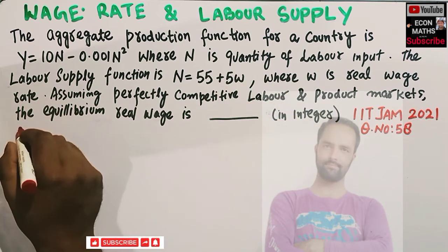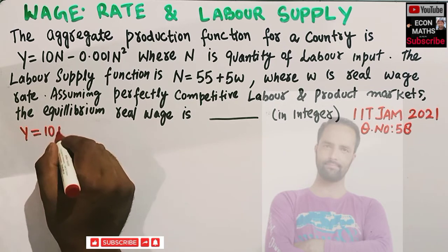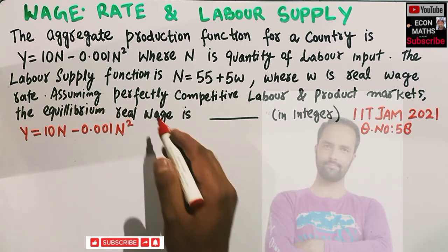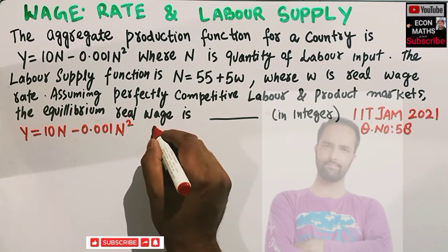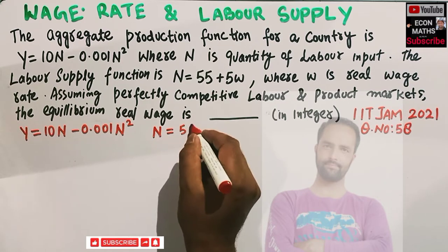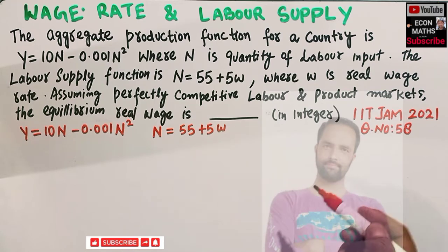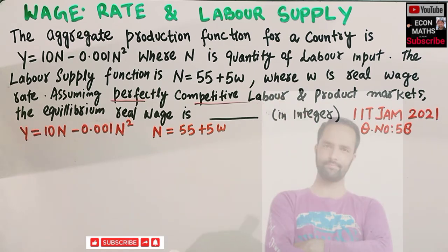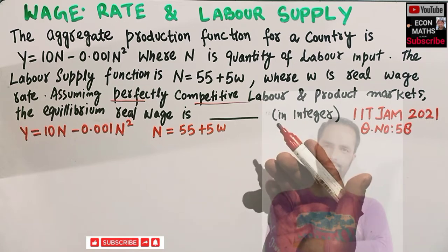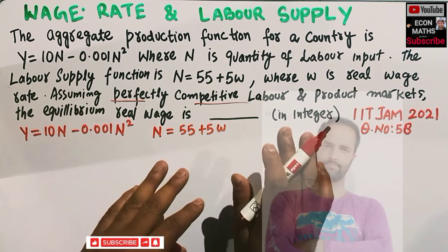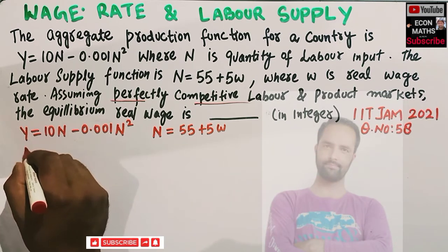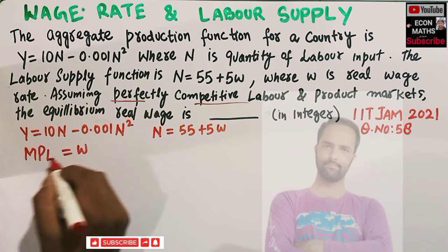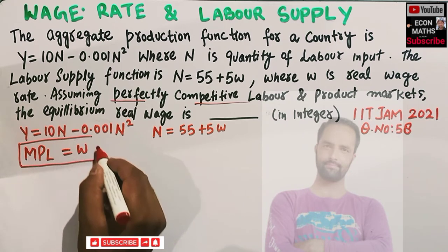So what we are given: the production function is y = 10n - 0.001n², and the labor supply is n = 55 + 5w. We are told we have perfectly competitive labor and product markets. If that is the case, equilibrium will occur at a point where the marginal product of labor is equal to the wage rate. This will be the condition for equilibrium.